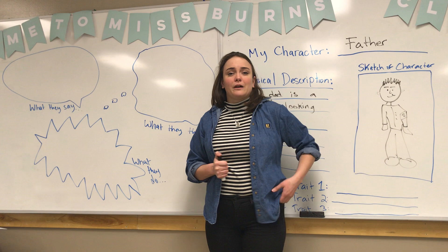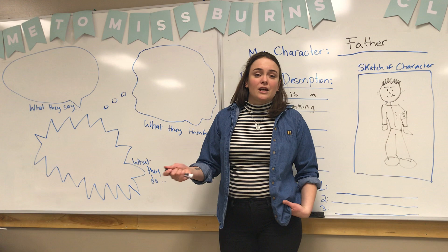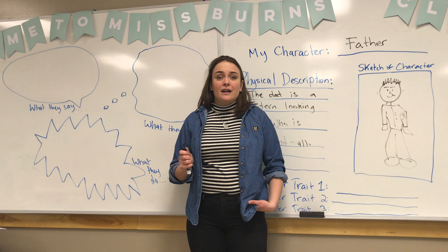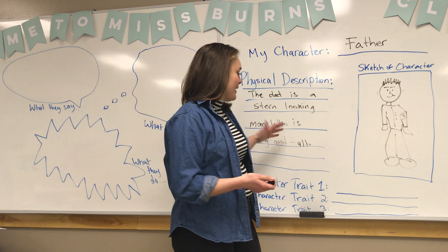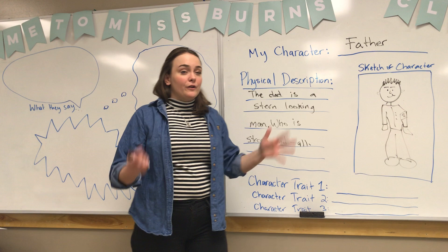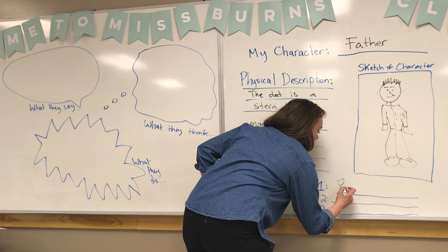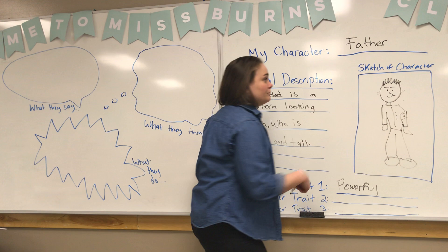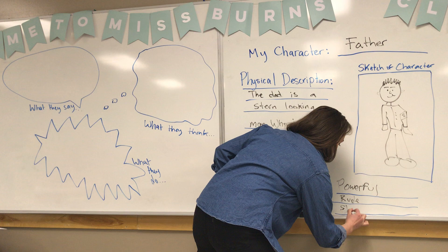In my introductory paragraph I might say: the dad is a Nazi soldier working for Germany. He's very passionate about his work and very invested in impressing Hitler throughout the novel. Then I'm going to write down the three character traits I've chosen for my essay. For example: he is a very powerful man, he is rude, and he is a strict dad.